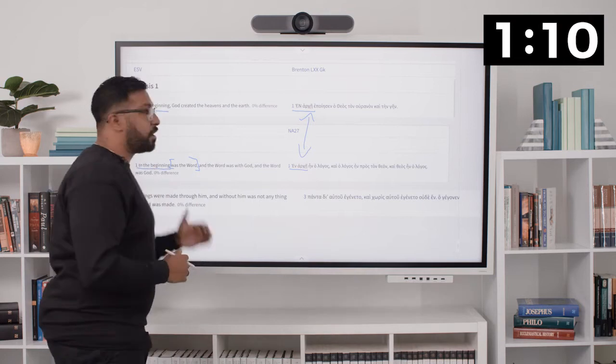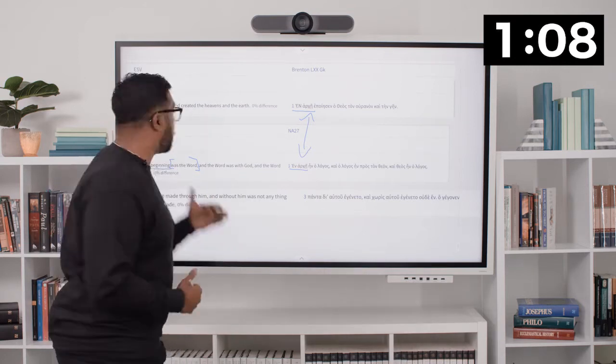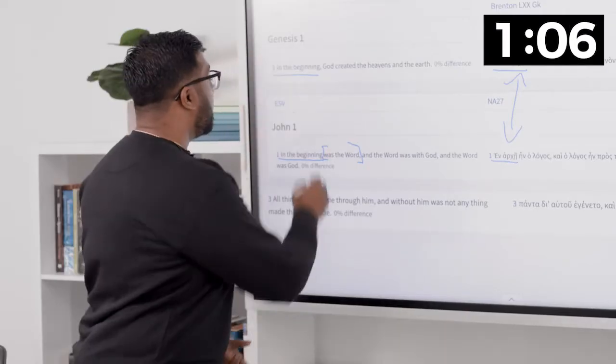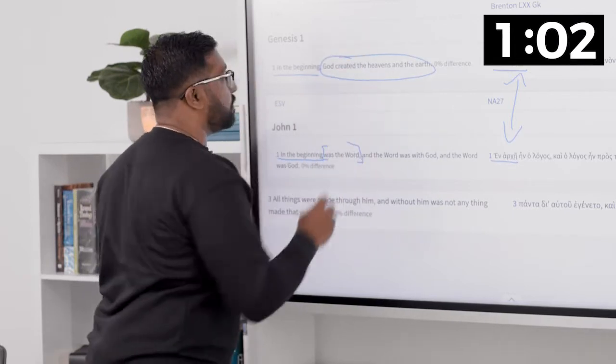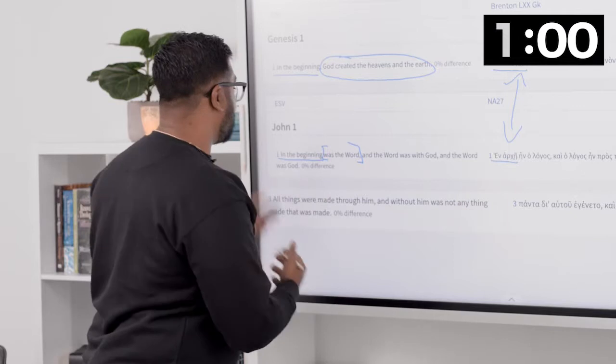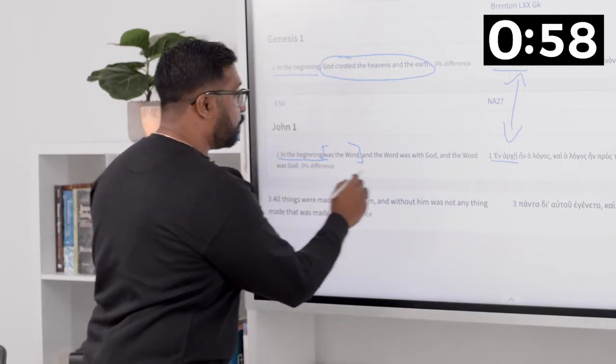However, in John 1 we almost have a commentary for what's taking place in Genesis 1. Here we have God created the heavens and the earth. How did this take place? Well, John 1 tells us. In the beginning was the word.